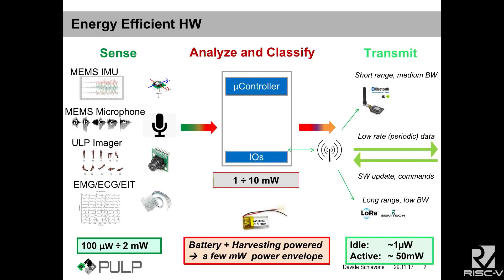PULP stands for Parallel Ultra-Low Power. Ultra-low power, because internet-of-things devices are usually battery-powered, so you don't have a lot of power to burn. We achieve that by leveraging technology and near-threshold computation, and it's parallel to meet performance constraints.